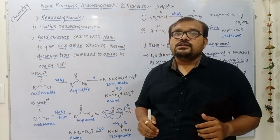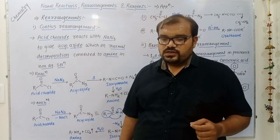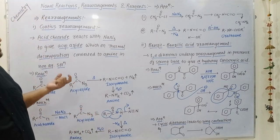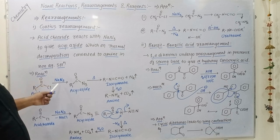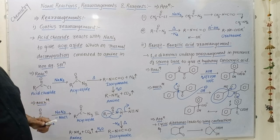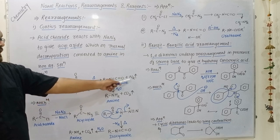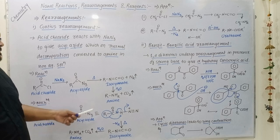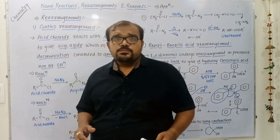This process — Curtius rearrangement — is generally carried out in non-aqueous solution. In the reaction, acyl chloride reacts with sodium azide to give acyl azide. Thermal decomposition of acyl azide gives isocyanate as an intermediate after loss of nitrogen (N₂), and this isocyanate upon hydrolysis gives the desired product — amine — with loss of carbon dioxide.